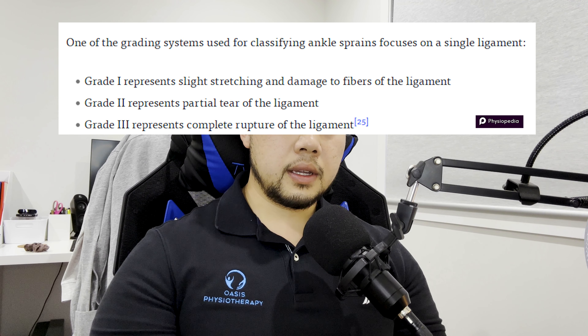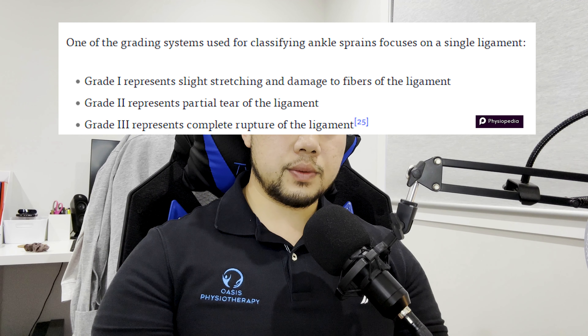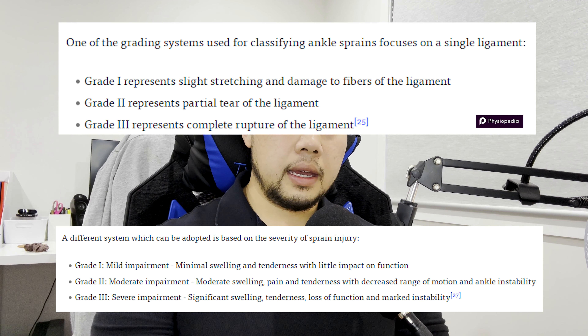From these tests we were able to determine it was a grade two tear to his ATFL. We diagnose ankle sprains or ligament sprains from grade one to grade three. Grade one means it's a slight over-stretch of the ligament. Grade two means it's a moderate stretch which has resulted in some tearing. Grade three is usually a complete tear of the ligament, and due to the nature of the position of the ATFL, it can result in an avulsion fracture, meaning the ligament has pulled some bone off.